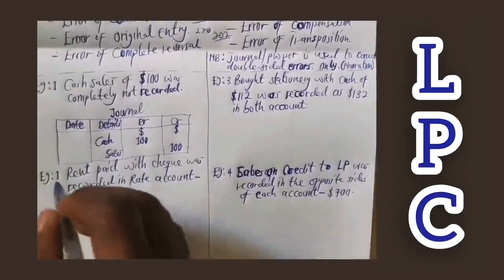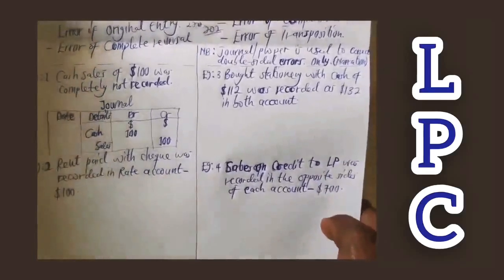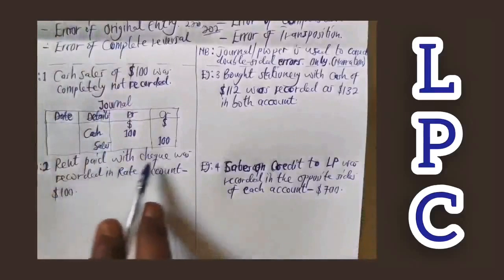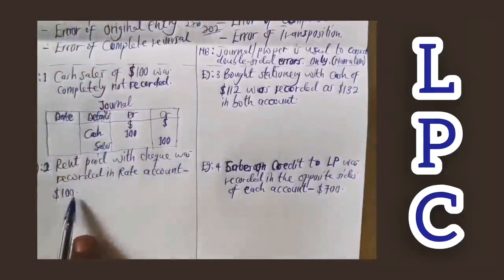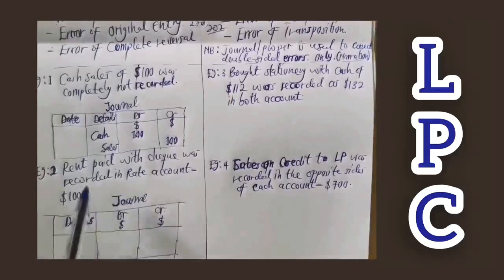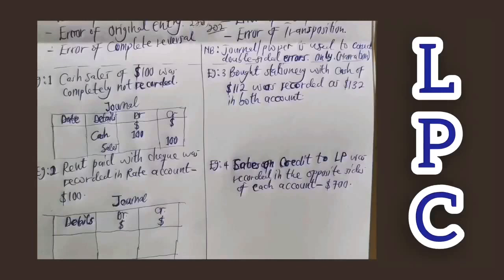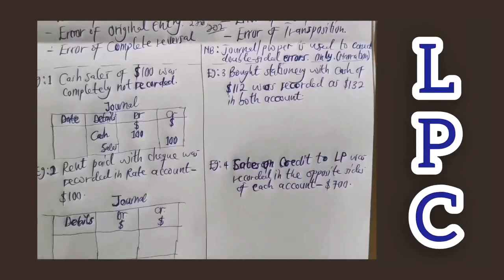Example two: rent paid by check was recorded in the rates account. What type of error is this? You can see that instead of recording in the rent account, it was recorded in the rates account. This is an error of commission, because both rent and rates are within the same class of account and have a similar name and nature.